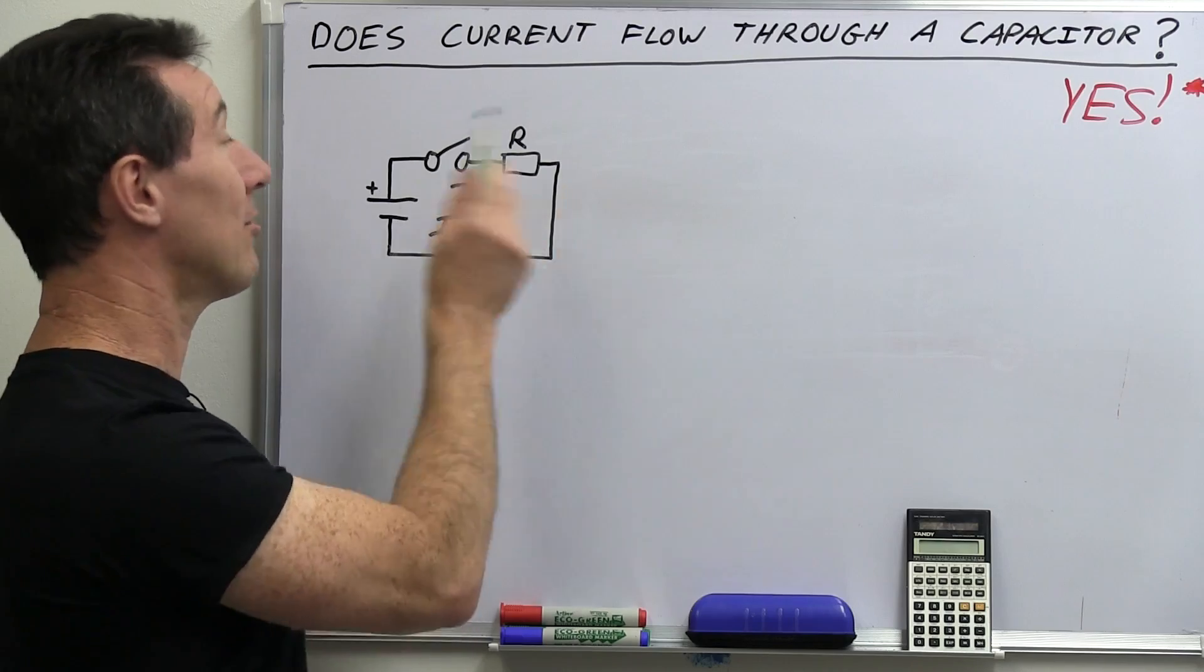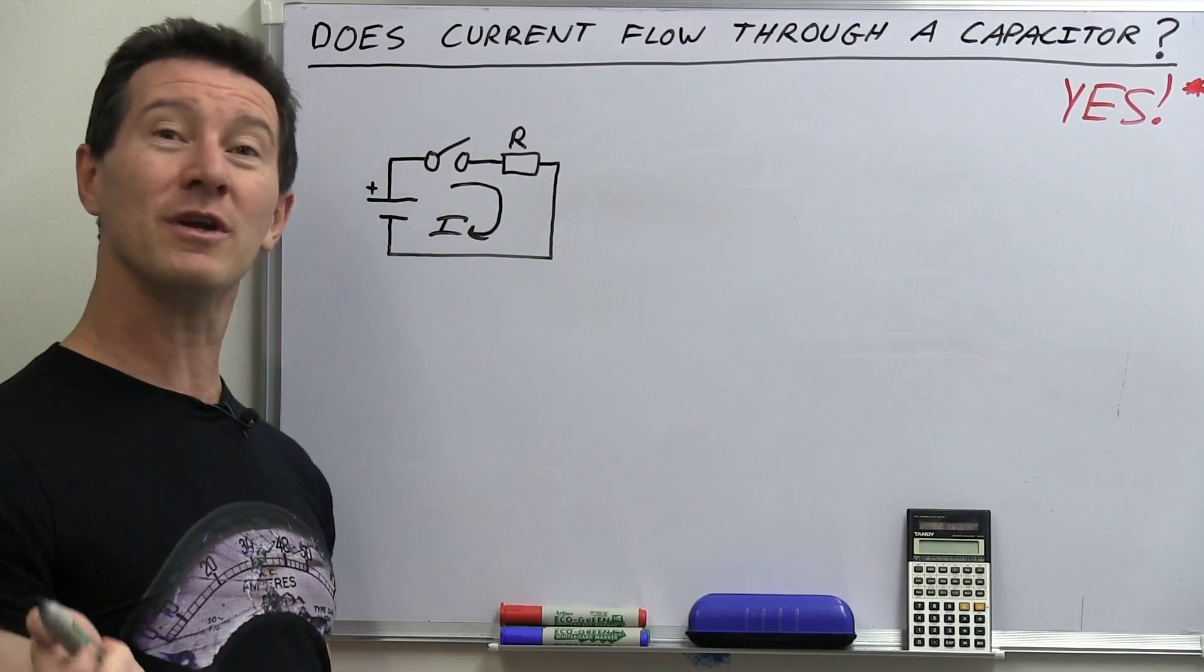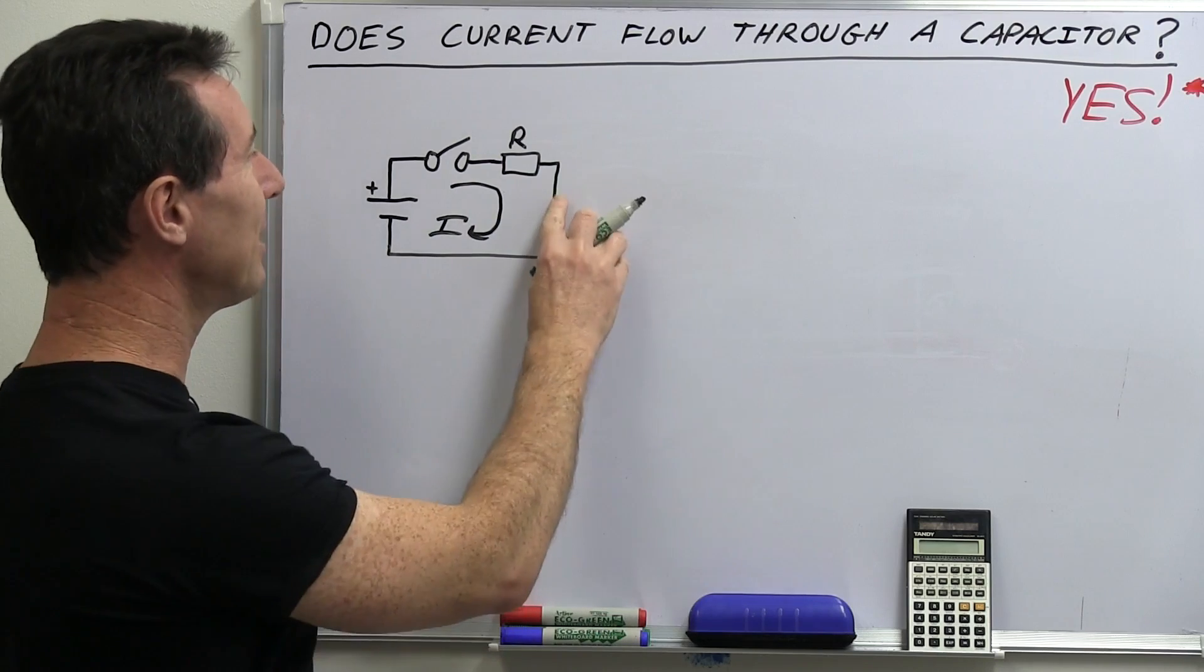Let's not mix up conventional and electron current flows, shall we? That's a whole other can of worms. But you close the switch, current flows, Ohm's law, all that stuff. Electronics 101.